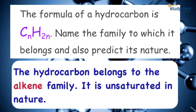The formula of a hydrocarbon is CnH2n. Name the family to which it belongs and also predict its nature. The formula CnH2n belongs to the family called alkenes.